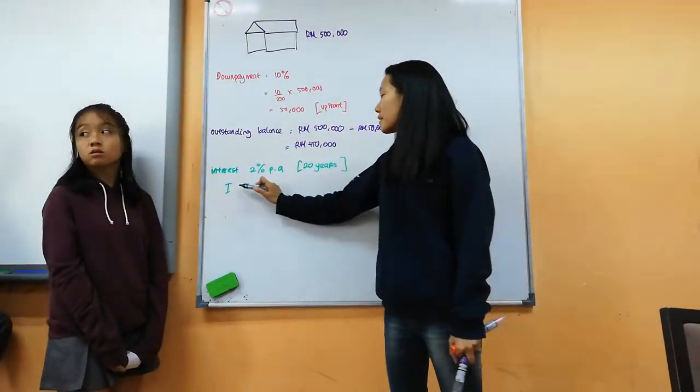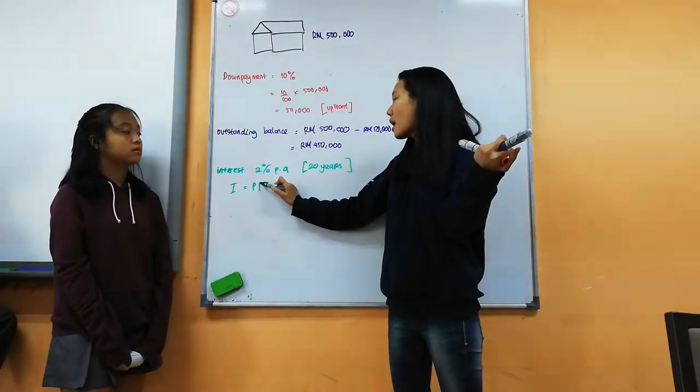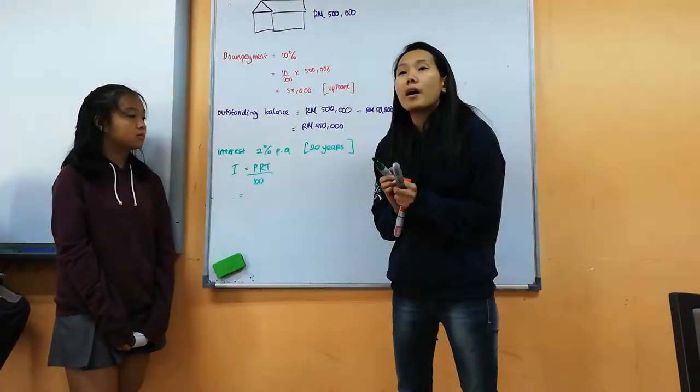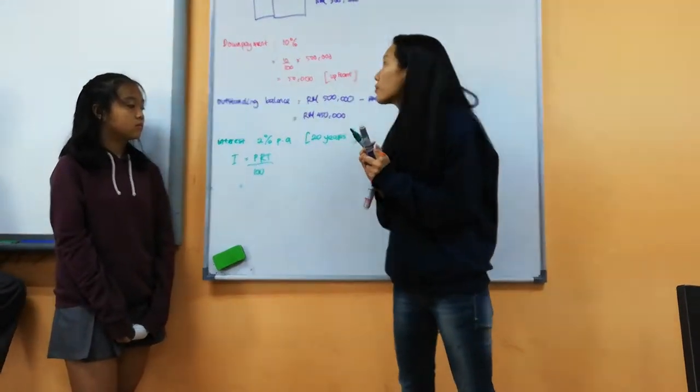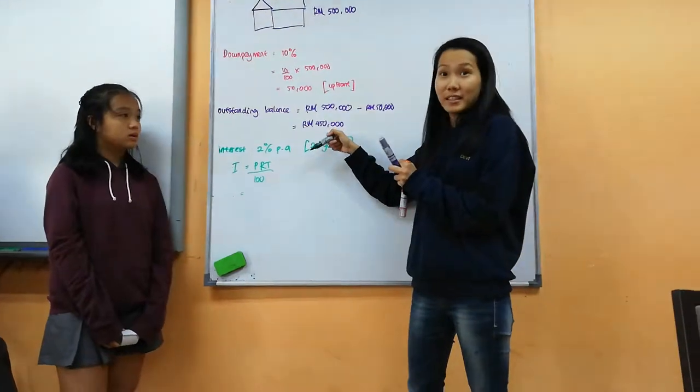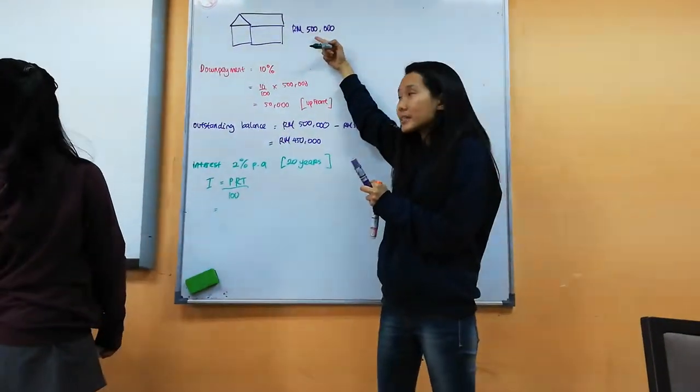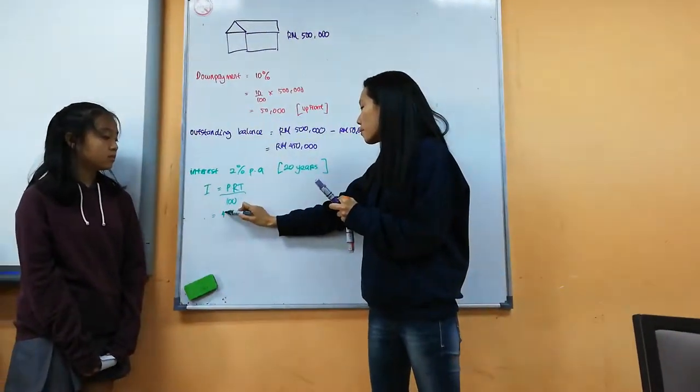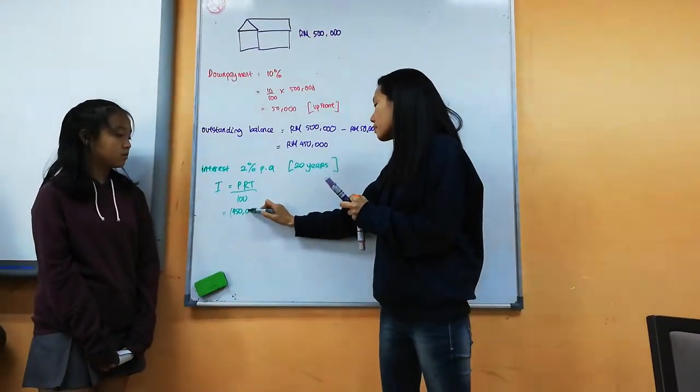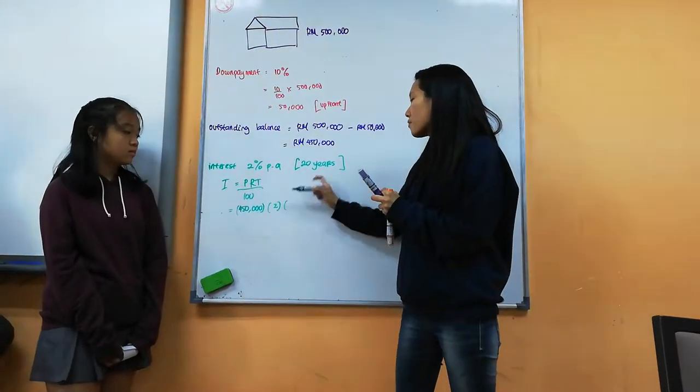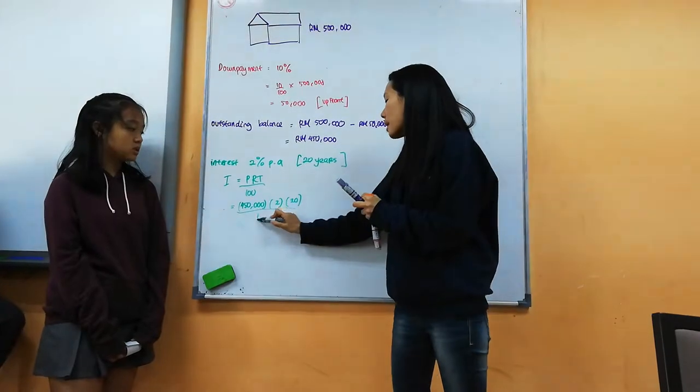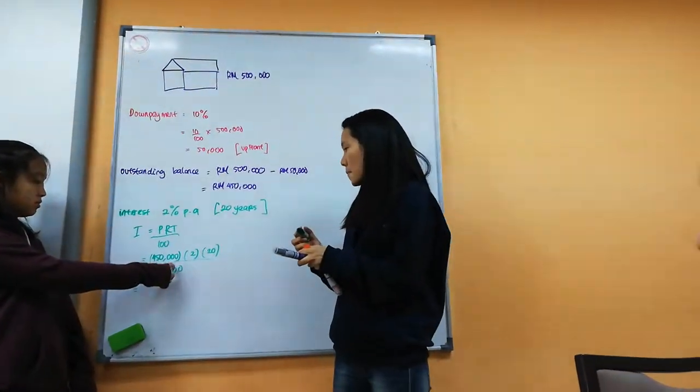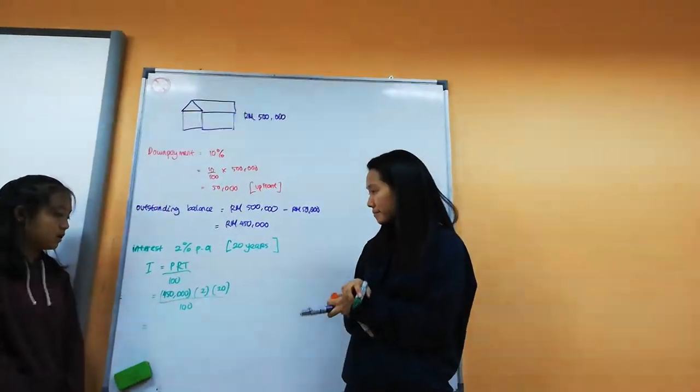Simple interest formula is P, R, T. Over 100. So let's calculate. Now, how much is the money I want to borrow from the bank? $450,000. Yes. I'm going to borrow this, I'm not going to borrow that. Because I already paid. I already paid $50,000. So I just need to borrow $450,000. My rate is 2% for 20 years. Help me calculate. How much is interest?